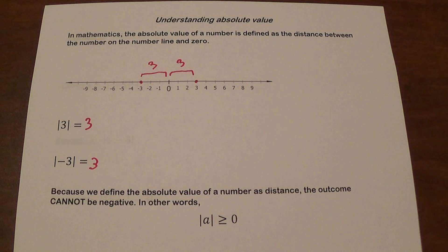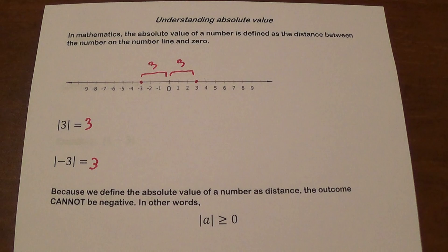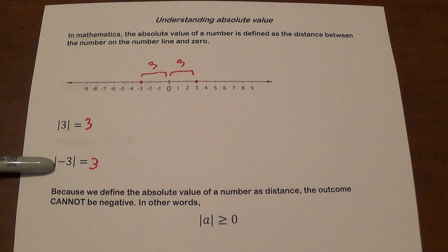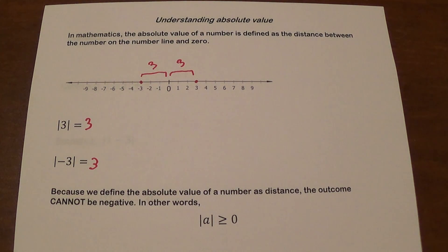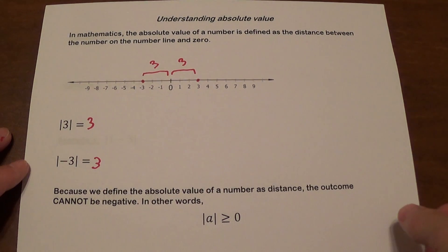It cannot be negative. And the second thing: there is sometimes confusion when students think, 'Oh, you just changed the sign.' No, you don't just change the sign. Because here, yes, it does look like you changed the sign, but over here you don't — it was positive 3 and you still got positive 3. So it's more like you remove the negative sign. But you don't really change it.